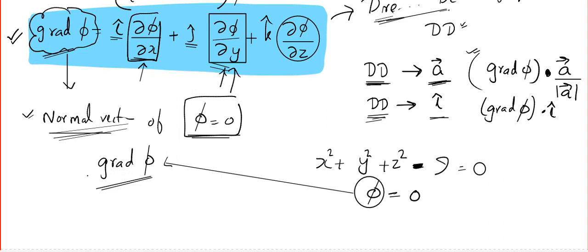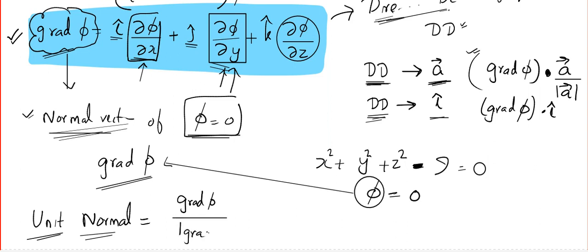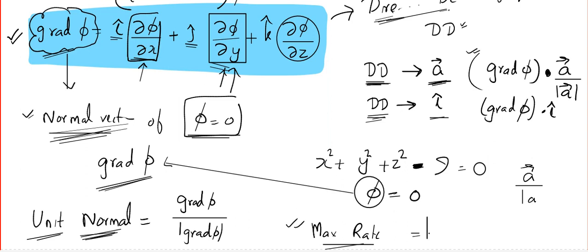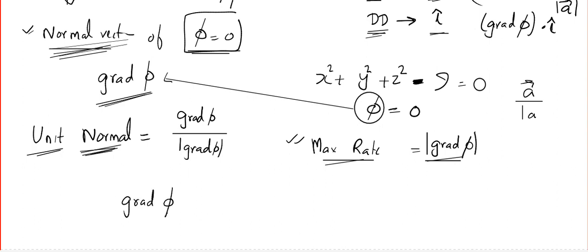The unit normal vector is given by grad φ divided by |grad φ|. That is simple — to create a unit vector, you divide by the modulus. Since grad φ is the normal, the unit normal will be grad φ / |grad φ|. Sometimes they may ask you to find the maximum rate of change — for that you find |grad φ|, because you get the normal vector with the maximum length. Also note: if grad φ = 0, then φ is a constant.